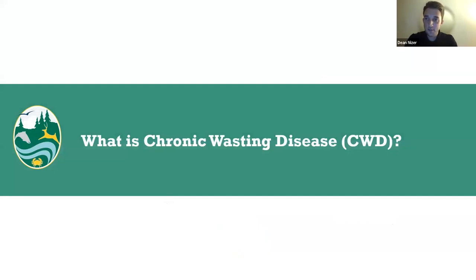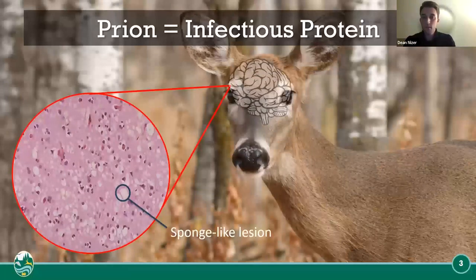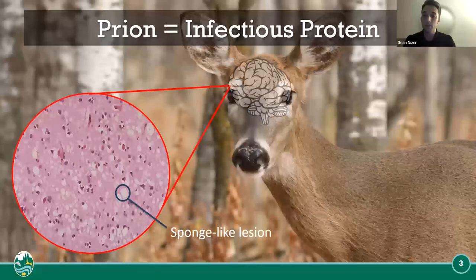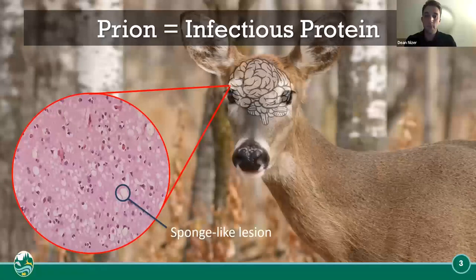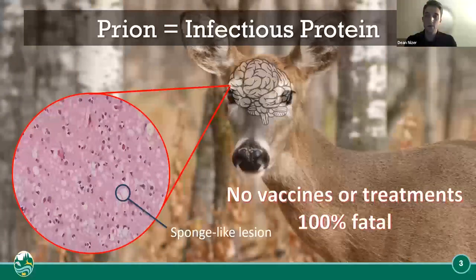So what is chronic wasting disease? Chronic wasting disease is a prion — a type of protein that can cause disease in animals and humans by triggering normally healthy proteins in the brain to fold abnormally. These prions can turn into an infectious protein and cause a sponge-like lesion in the brain. Currently there are no vaccines or treatments and it's 100% fatal for all cervids.